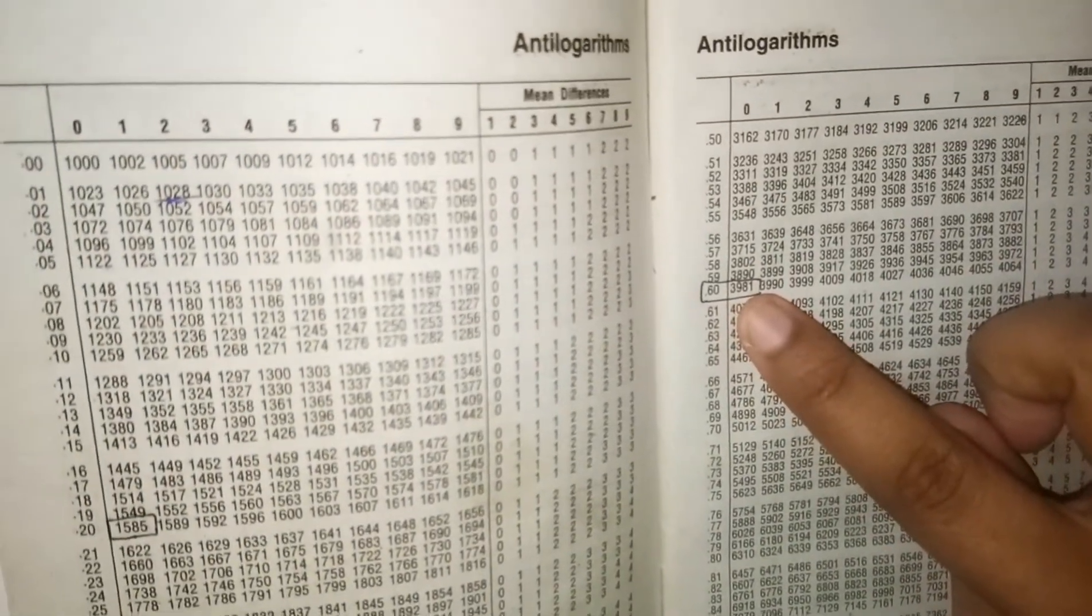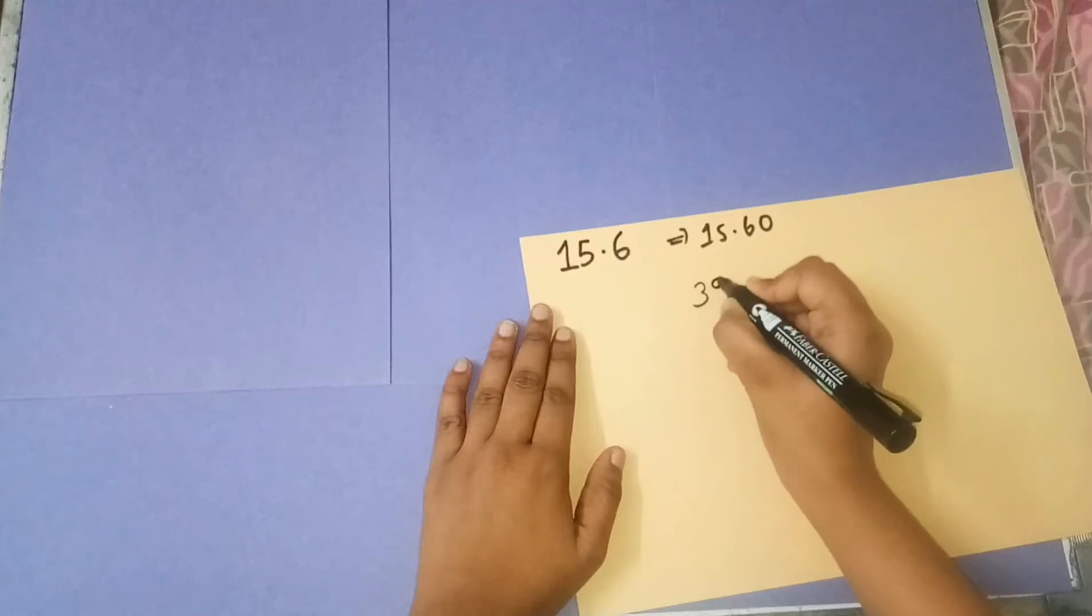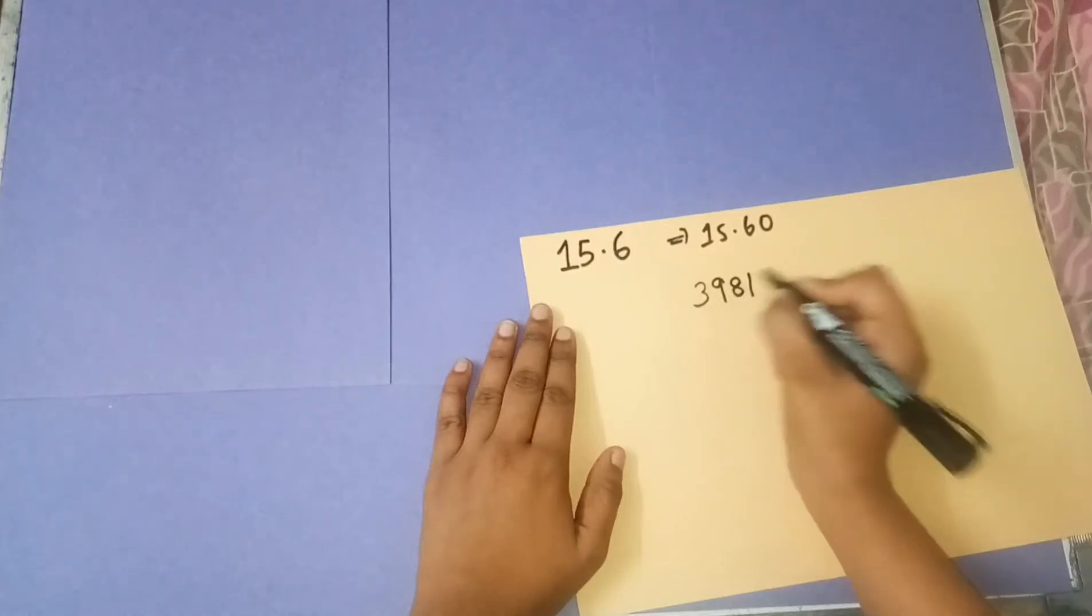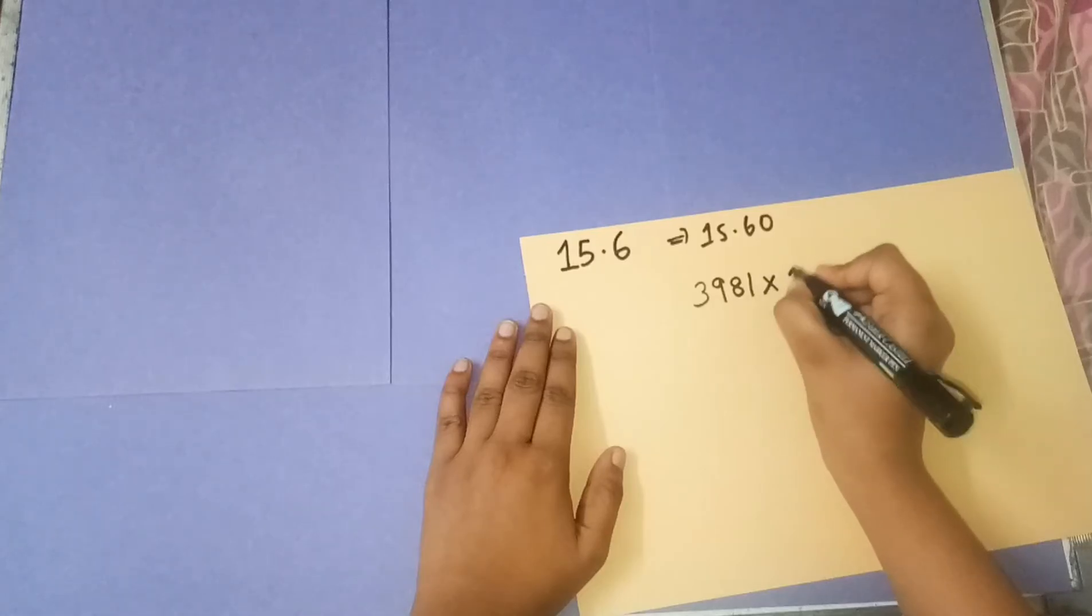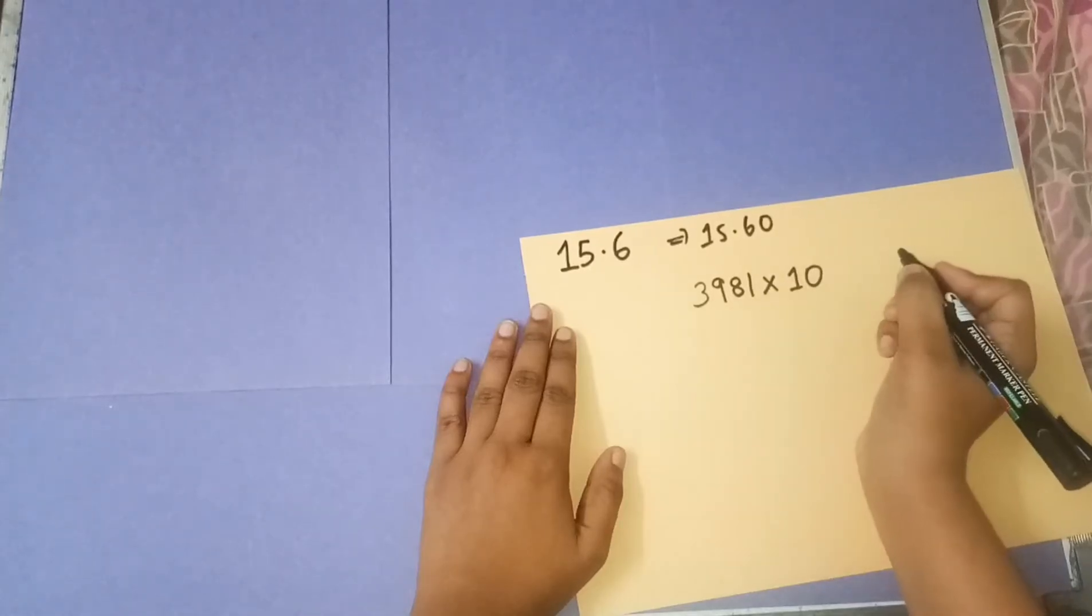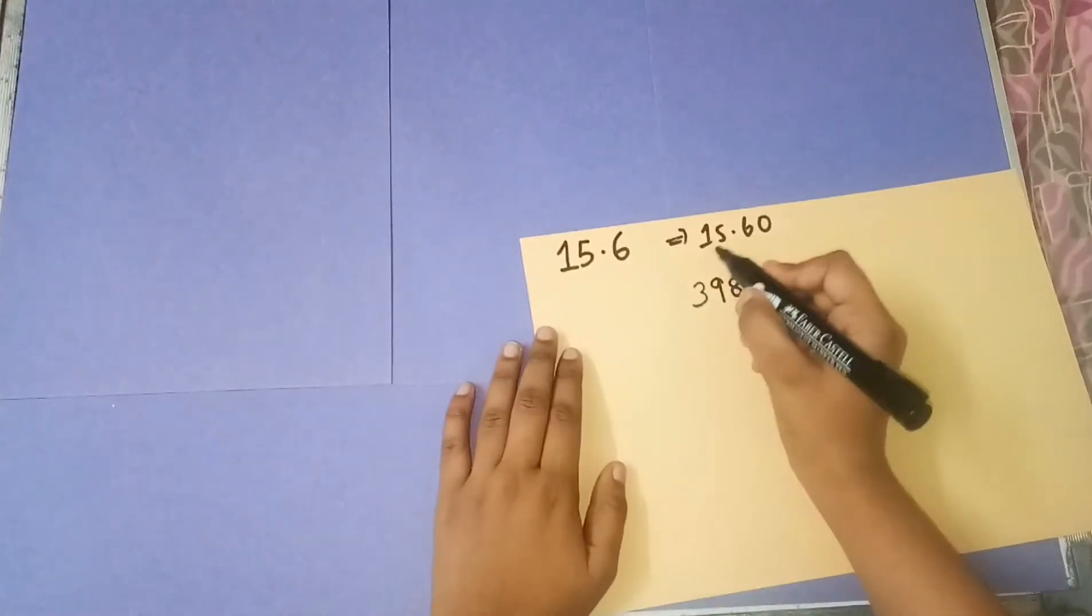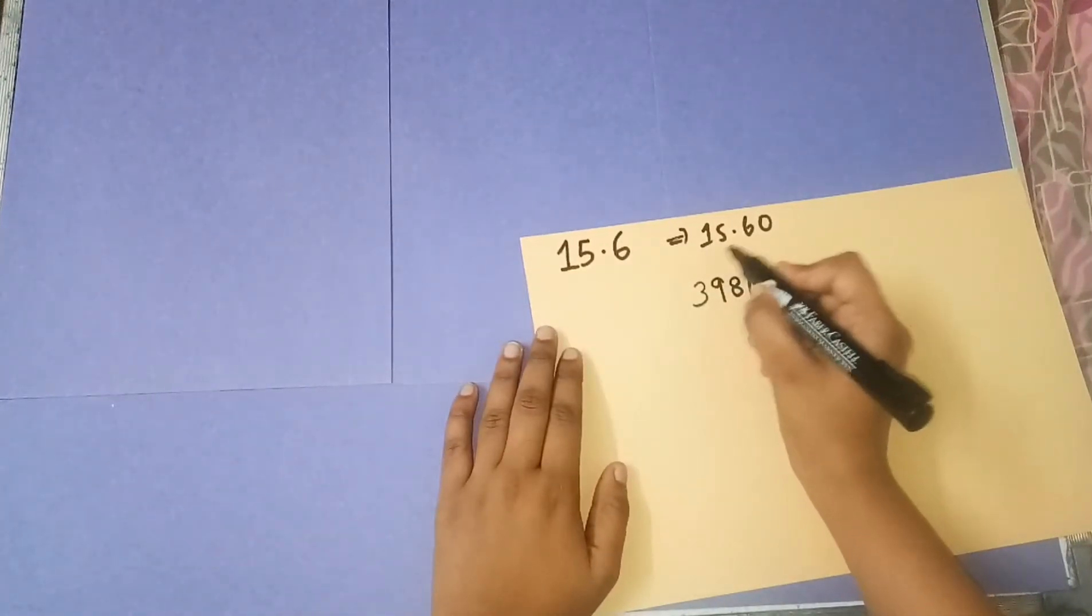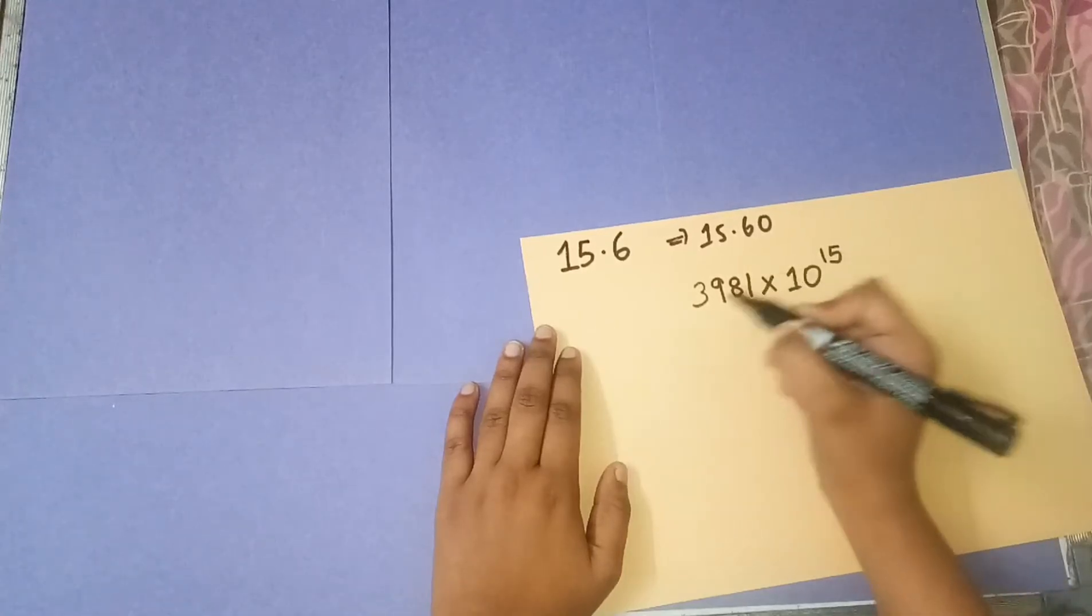The value under zero is 3981. After finding that, write it as 3981, then write times 10 to the power of the whole number part, or the characteristic. In this case, it's 10 to the power 15.